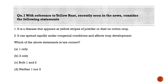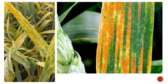Under congenial conditions and affects crop development. Which of the above statements is correct? Option A: one only. Option B: two only. Option C: both one and two. Option D: neither one nor two. The correct answer is Option B, two only. It is a disease that appears on wheat crops, not on cotton crops.